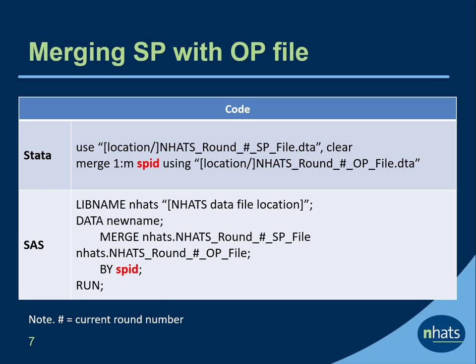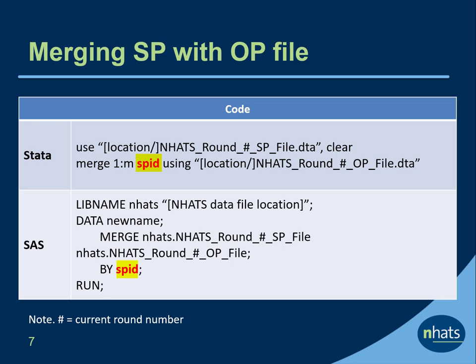Here we show Stata and SAS code for merging an NHATS SP file with an OP file. Because there are many OP records for each SP, in Stata the user must specify a 1-to-many or 1-to-m merge. For both Stata and SAS, the merge variable SPID is shown in red.